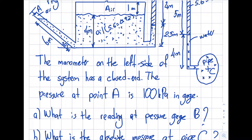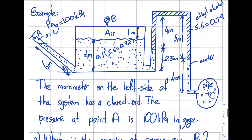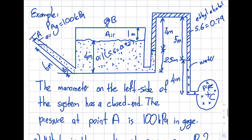The question is asking: what is the reading at pressure gauge B? There's a device called a pressure gauge and it's asking for the pressure reading off of that one. It will be gauge pressure, as the name of the device recommends. Basically what I need to do is go down over here and up over here and find the pressure at B.